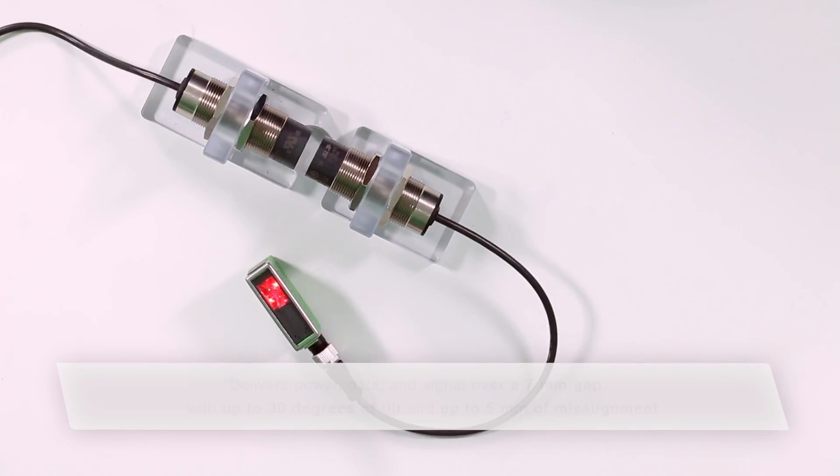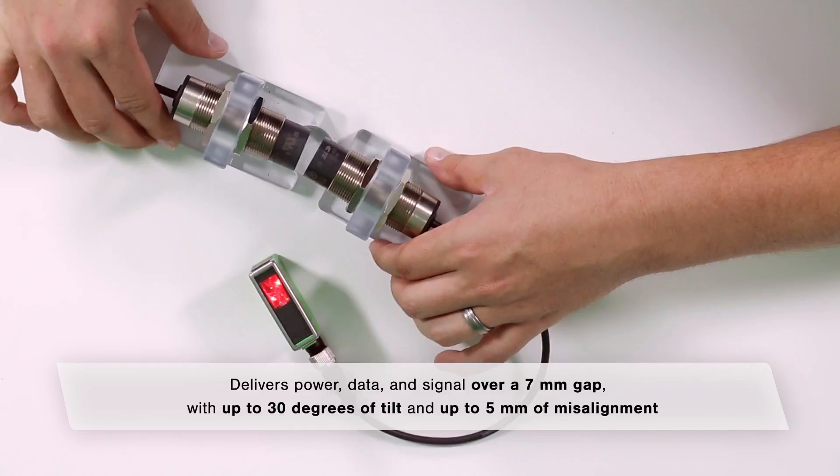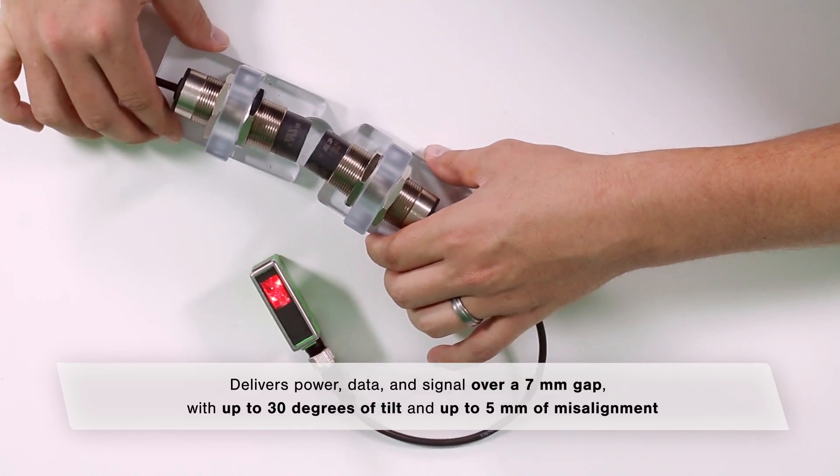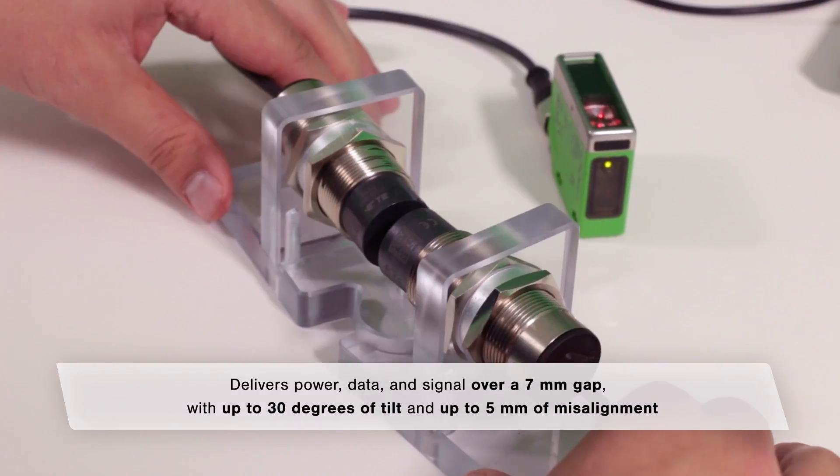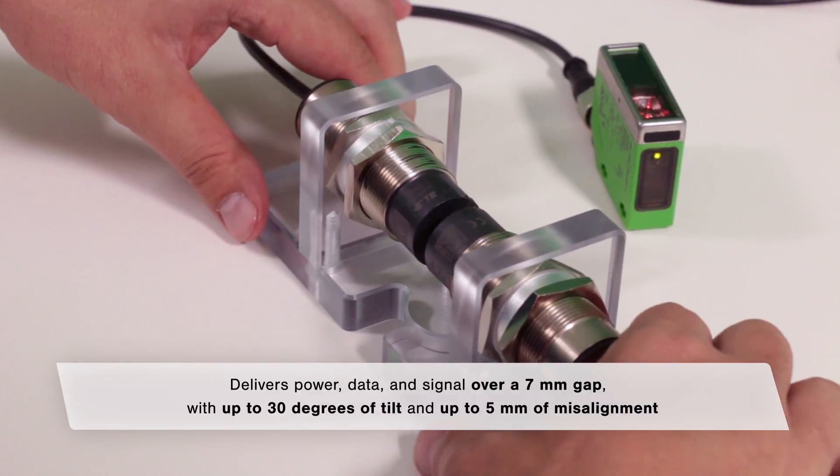Now, ARISO can also tolerate up to 30 degrees of tilt. You can see it's still functioning even though they're not directly aligned. It can also tolerate up to 5mm of misalignment, and as I exceed that, you'll see it turn off.